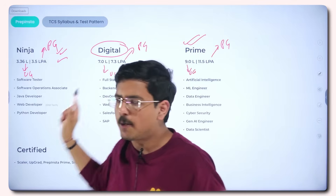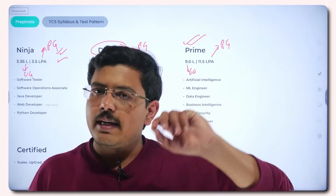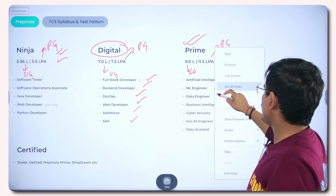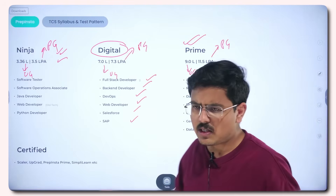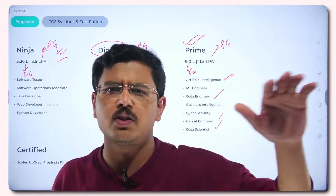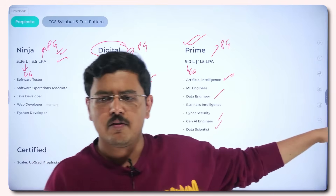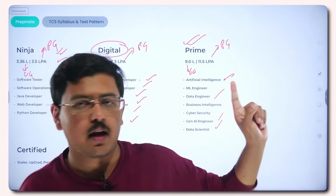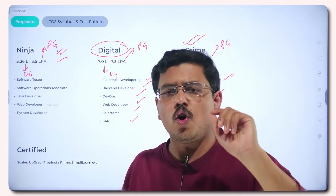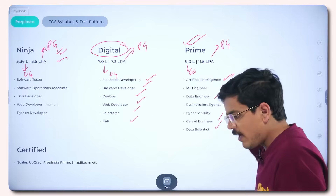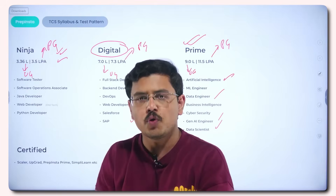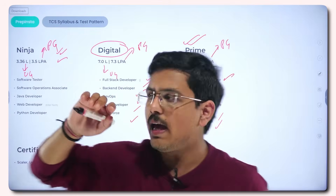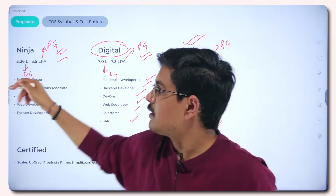Prime is the champion profile — getting Prime can altogether paradigm-shift your career journey. In Prime you will have AI Engineer, ML Engineer, Data Engineer, Data Scientist, Gen AI Engineer, Cyber Security, and Business Intelligence — cutting-edge domains, finest technologies, best flagship projects, and top leadership mentoring. So please target this profile. Even if you're not great at coding or aptitude right now, work hard aiming for Prime. Shoot for the moon and you'll land among stars.